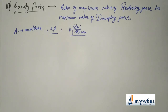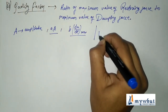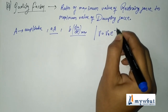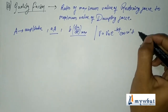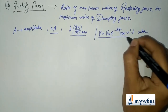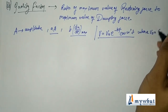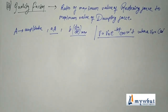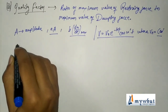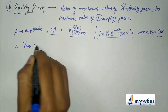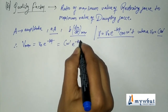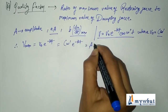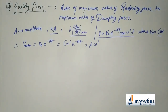For damped oscillations, the velocity for small damping can be written from the previously defined equations as v equal to v0 e to the power minus kt cos of omega dash t, where v0 equals c omega dash. Therefore, v max equals c omega dash into e to the power minus kt, which equals A omega dash, where A is the amplitude c into e to the power minus kt.